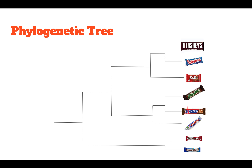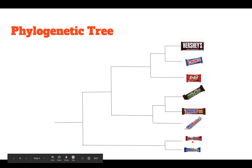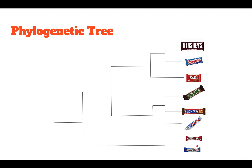The Milky Way and the Snickers bar are pretty closely related because they both have nuts and caramel. We have the Three Musketeers as an outgroup, because maybe the common ancestor on this internal node was a tube-shaped chocolate bar that didn't have the nuts and caramel seen in Milky Way or Snickers. All the way down on this bottom node, the Mounds and Almond Joy probably diverged way back — their most recent common ancestor is all the way back here, because Mounds and Almond Joy have coconut and almonds.